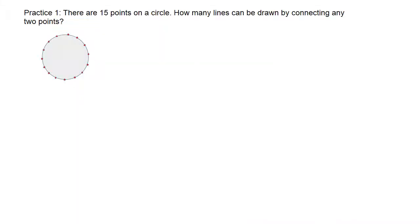Now try this practice on your own, and when you're ready, unpause the video. This problem is about connecting 15 points on a circle and counting how many lines can be drawn by connecting any two points. Starting with point one — since there are 15 points total, from point one I can create 14 lines by connecting to all 14 other points. So I have 14 lines added.